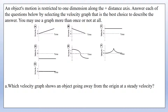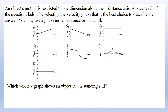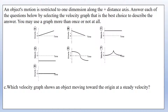Part A asks which graph shows an object going away from the origin at a steady velocity. Steady means constant velocity, and going away from the origin in the positive displacement region means positive velocity. Graph C shows a constant positive velocity, so that's the answer. Graph D would mean moving towards the origin, so we can't use that one.